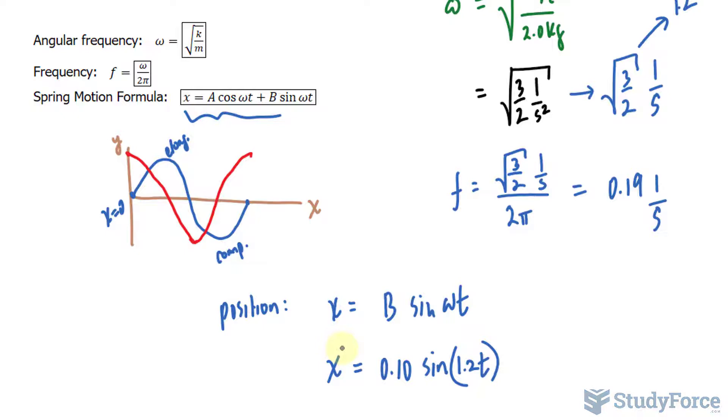Another way to represent this value 1.2 is to write it in terms of the frequency. Look at this formula here: frequency equals omega over 2 pi. You can multiply both sides by 2 pi, and you get frequency times 2 pi equals omega. So instead of 1.2, you can write down 0.19 times 2 pi t.